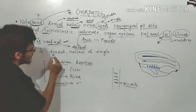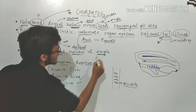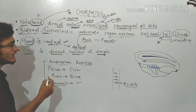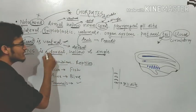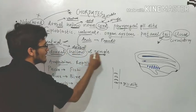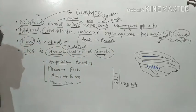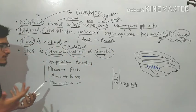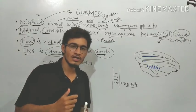Then CNS is dorsal, hollow and single that we have already talked about. In case of non-chordates, that is ventral, solid and double. Just reverse the case.